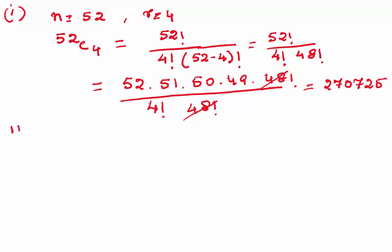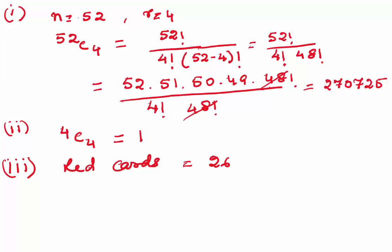For the second part, we select four cards such that all four are kings. There are only 4 kings, so we need 4C4, and NCN is always 1. For the third part, all four are red cards. There are 26 red cards in total, so we select 4 from those 26, giving 26C4.